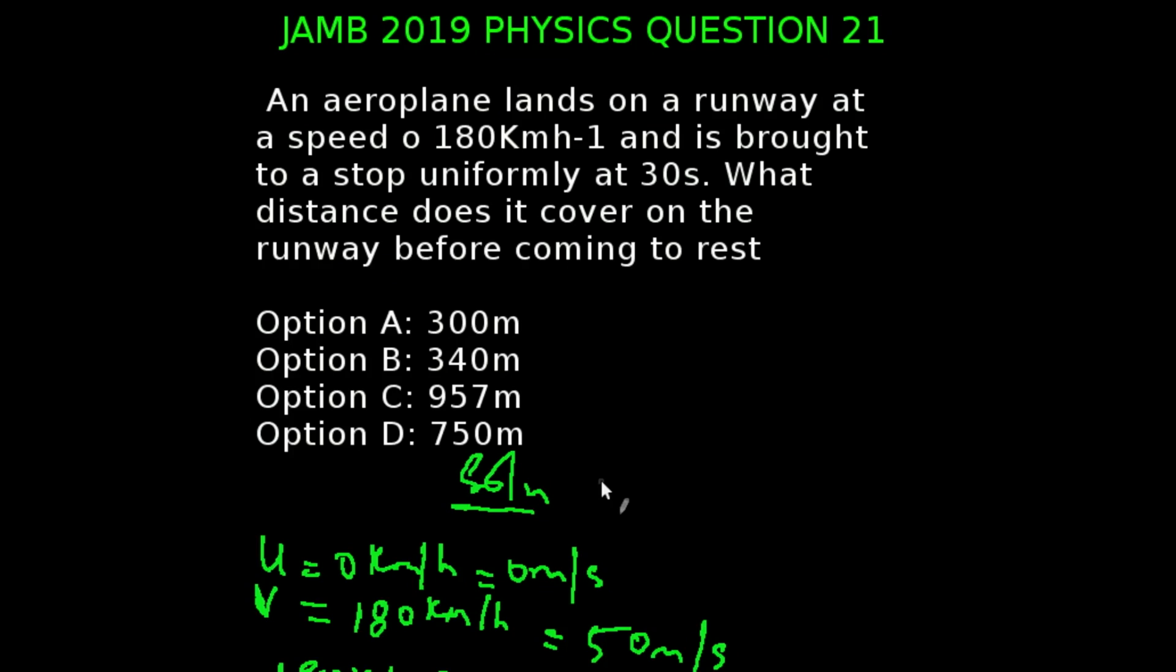You're looking at JAMB 2019 physics examination, question number 21. An airplane lands on a runway at a speed of 180 kilometers per hour and is brought to a stop uniformly at 30 seconds. What distance does it cover on the runway before coming to rest?